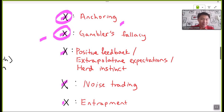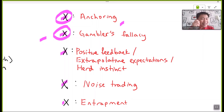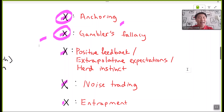Secondly, gambler fallacy. Based on past trends of sunny weather at the vacation location, a person may believe the sunny weather will come to an end, so they speculate it may rain tomorrow and bring a raincoat. The same applies to share price prediction — an investor may believe past trends may come to an end and reverse, a mentality called gambler fallacy.